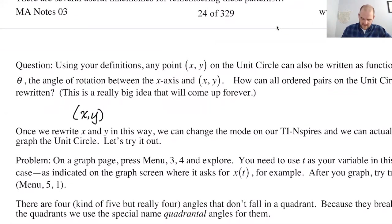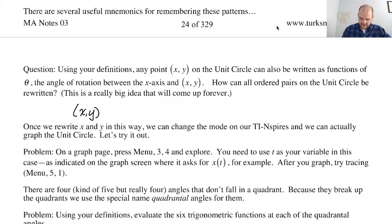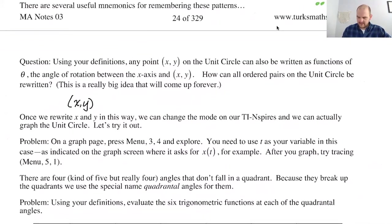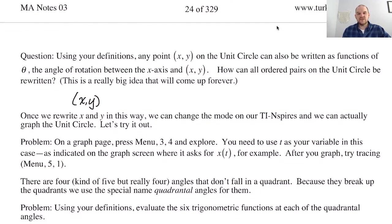This question says, using your definitions, any point (x, y) on the unit circle can also be written as a function of theta, the angle of rotation between the x-axis and the point (x, y). So all ordered pairs on the unit circle can really be rewritten as cosine of theta, comma, sine of theta.